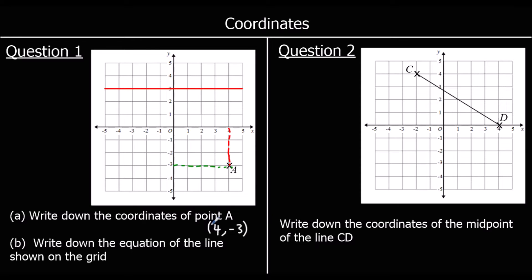So we write our coordinates in brackets, x, y. So its x-coordinate is 4. It's 4 along the x. And its y-coordinate is negative 3. It's 3 down the y-axis.